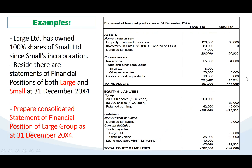Let's say Large Limited has owned 100% of the shares of Small since Small's incorporation. We have financial statements of Large and Small as at 31st December 2014, and we need to prepare the consolidated statement of financial position of the Large Group as at 31st December 2014. Small is 100% owned by Large.